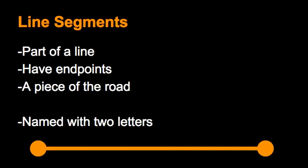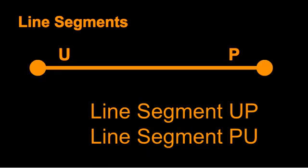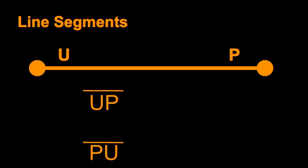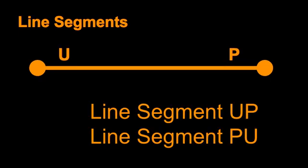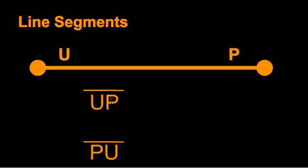We can name line segments with two letters. So this line segment — I have named the endpoints. This is endpoint U, this is endpoint P. One way I can name this line segment is by saying line segment UP. I can also name it by saying line segment PU, so I can say it in both directions. We can also write this shorthand — instead of writing out line segment UP and line segment PU, we write the two letters UP and put the line segment symbol over the top of it. This is math notation meaning line segment UP. Likewise, this is math notation for line segment PU.